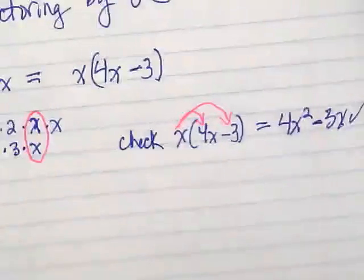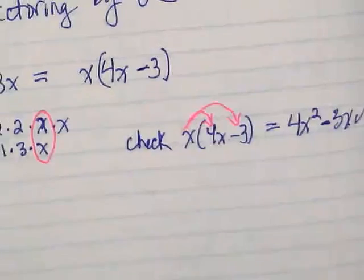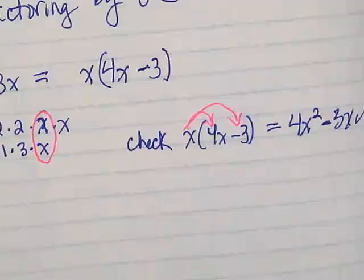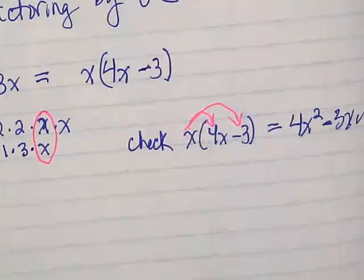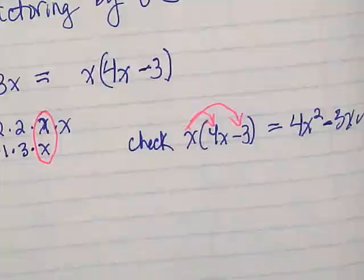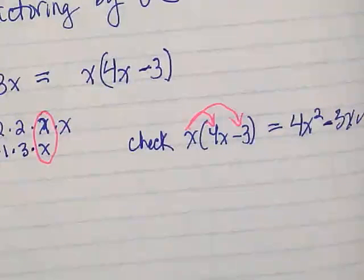I'm sorry I was off screen for that. Do you see how they're the opposite of each other? Distributive property is the multiplication. Factoring is the division. Do you see the relationship? They're inverses.